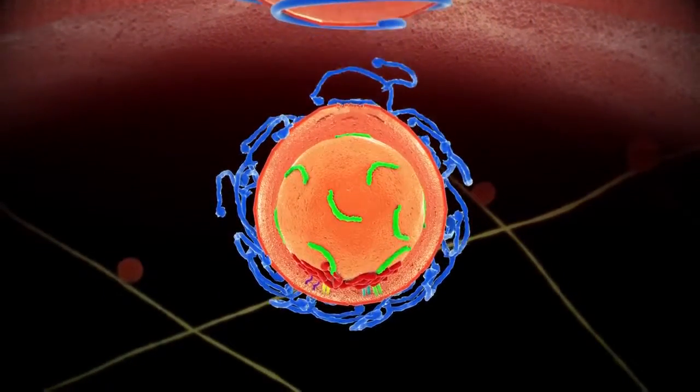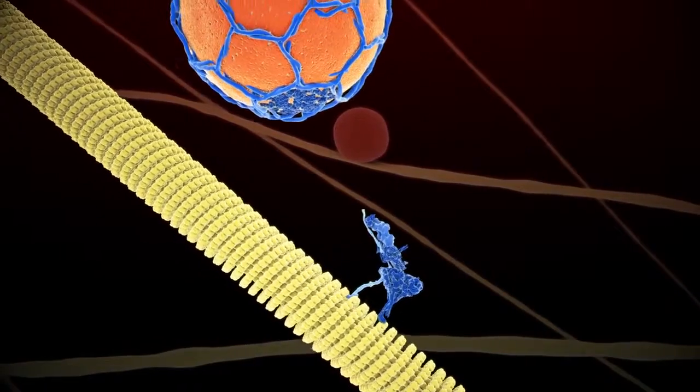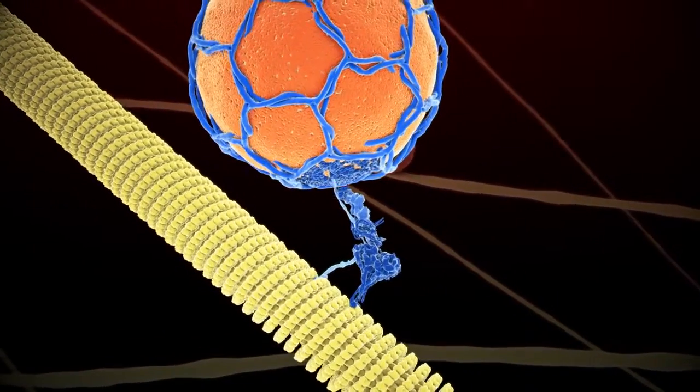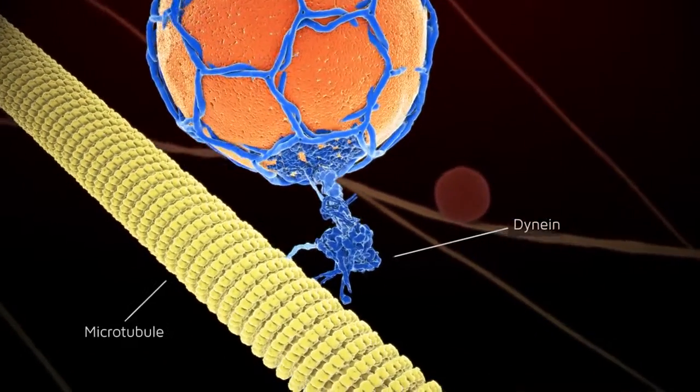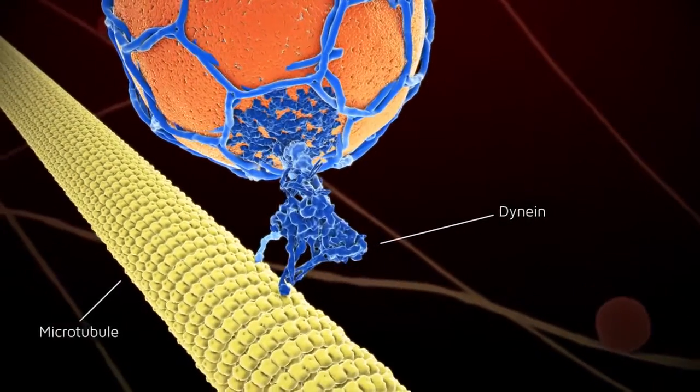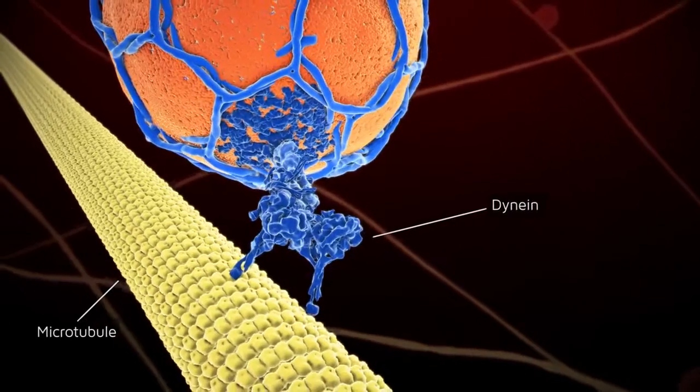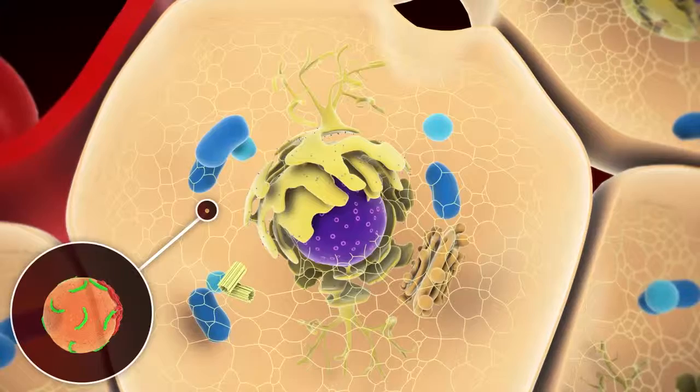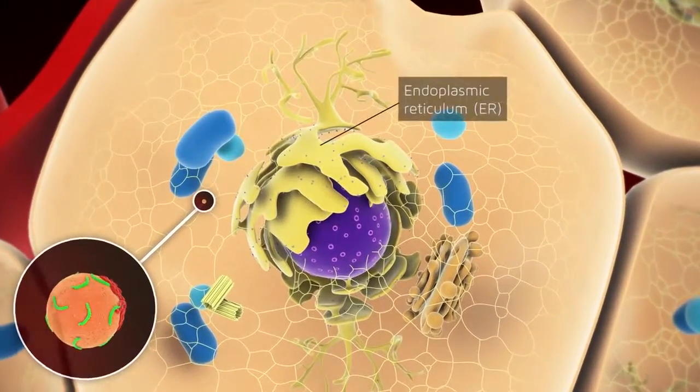After its release into the cytosol, the clathrin-coated vesicle interacts with the motor protein dynein. Dynein transports the vesicle by walking along microtubules to reach the endoplasmic reticulum area.